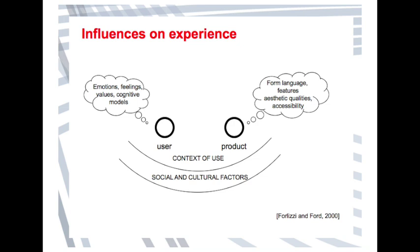What affects our experience? First of all, ourselves — our emotions, feelings, cognitive models, values, and history. But also the product or service itself has its own language, features, aesthetic qualities, and accessibility. And also the context of use: I can have a fantastic experience at a festival if the weather and social conditions are positive, but in a different situation — bad weather, fights, bad behavior — the experience can be very bad. Social and cultural factors affect the way we perceive and experience something.